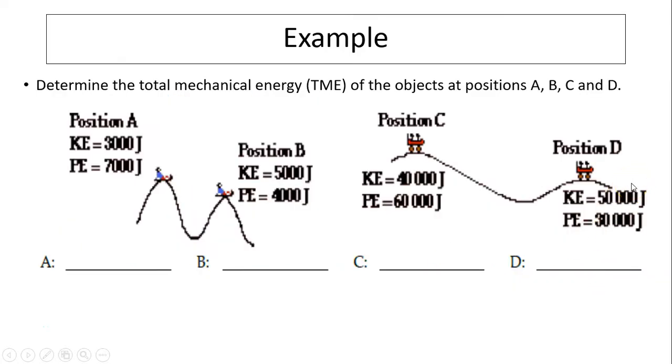Let's take a look at this example. Determine the total mechanical energy of the object at positions A, B, C, and D. Total mechanical energy is defined as the sum of kinetic and potential. So at all points, you simply add everything together. You can pause the video, try to do it yourself, then compare if your answer is correct. So here are the answers.